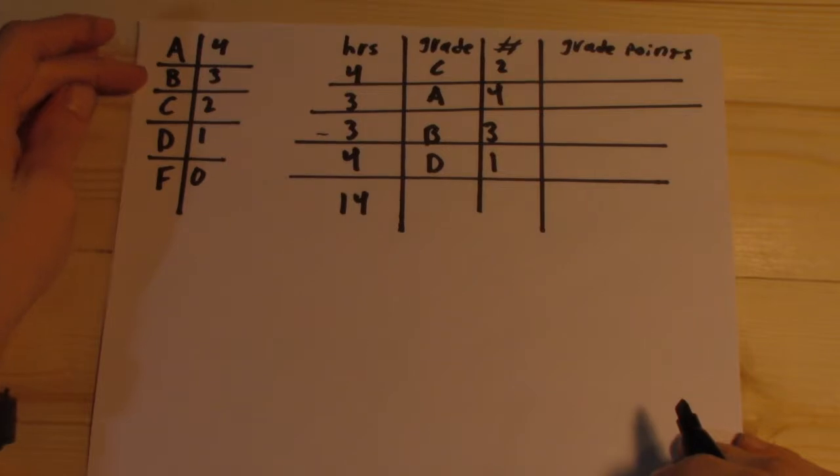A is worth 4 points, B is worth 3, C is worth 2, D is worth 1, and F is worth 0.